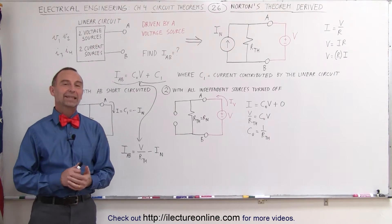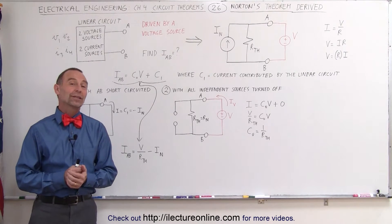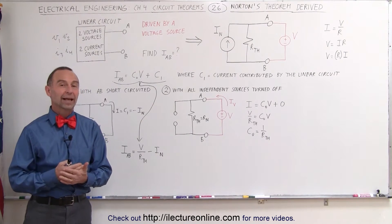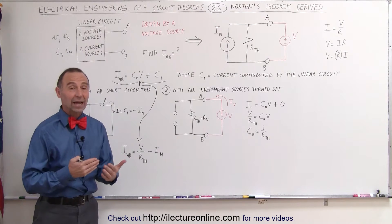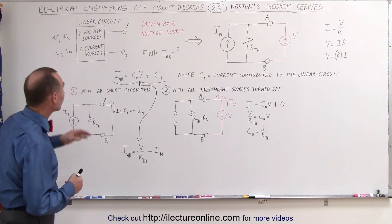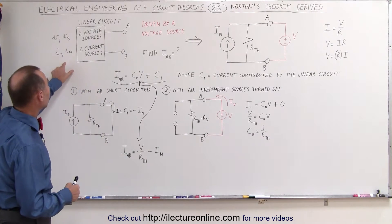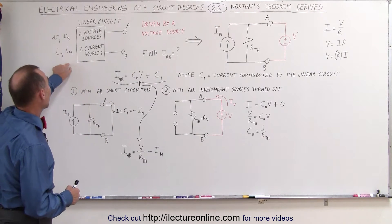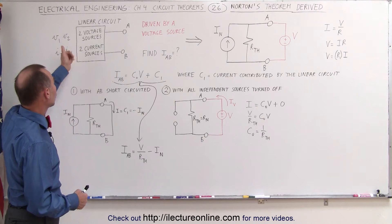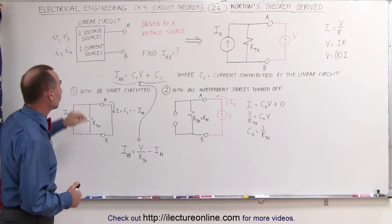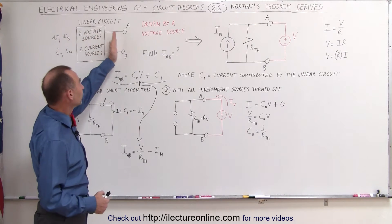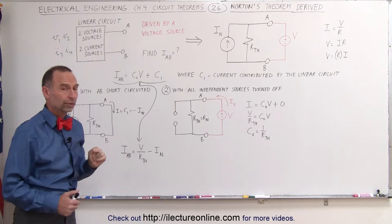Welcome to Electron Online. In this video, we're going to take a look at Norton's theorem and see why it actually makes sense. We start off with a linear circuit that has two voltage sources and two current sources, and terminals A and B emanating from the linear circuit.